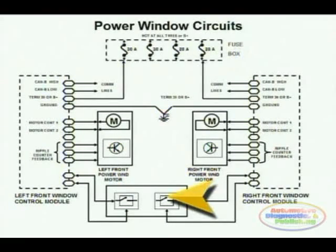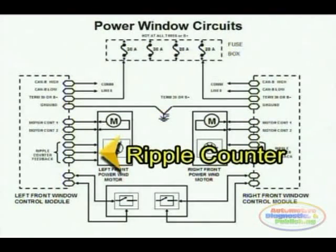A power transistor or chip, a solid state device, is used to do the motor control. In this particular case, we also see that in between the motor unit and the module is something called a ripple counter.